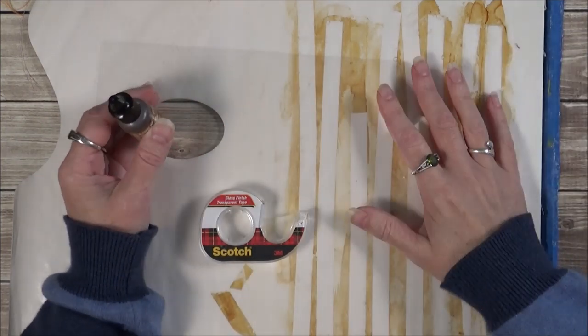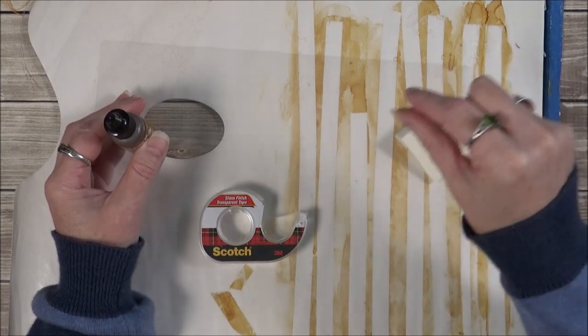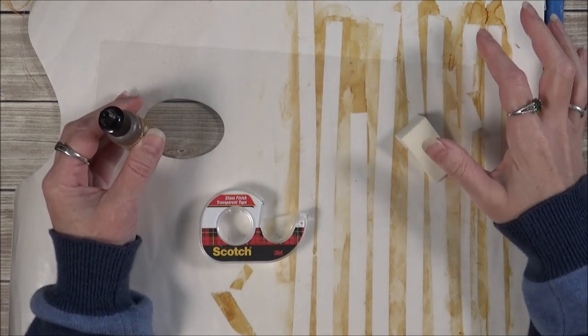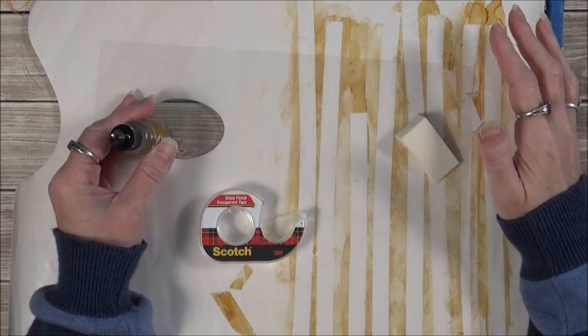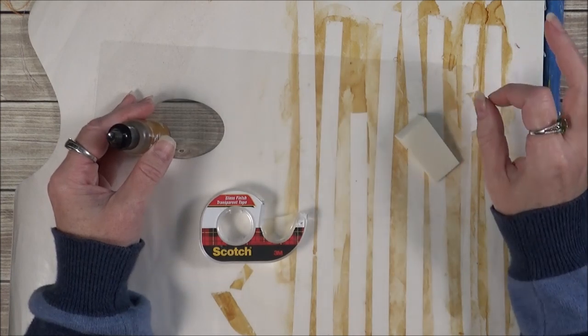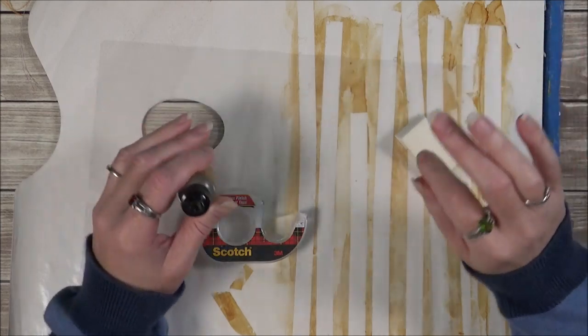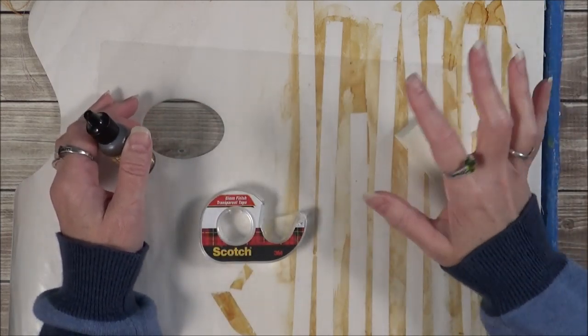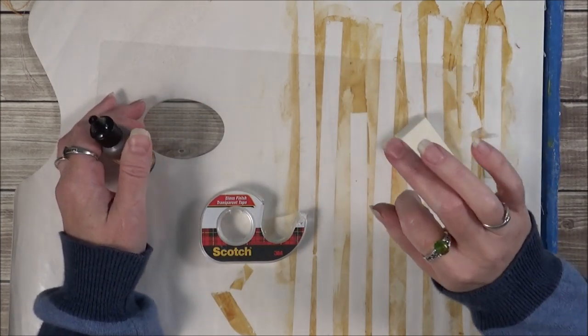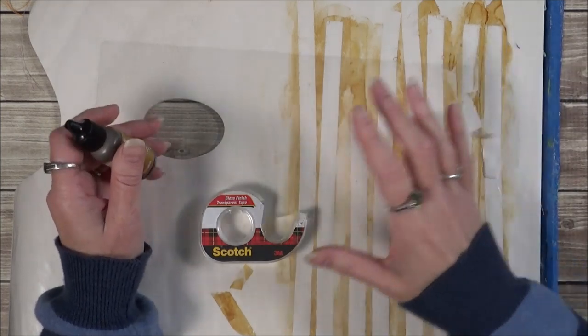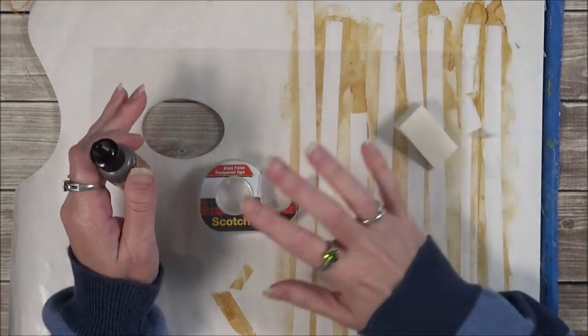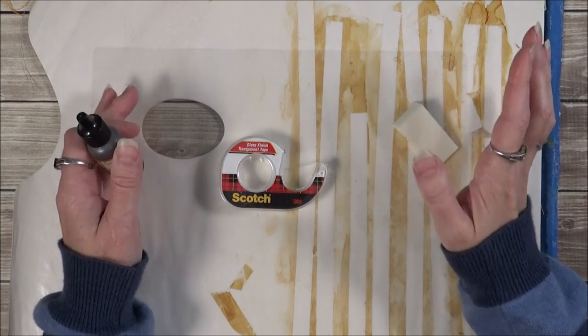So if you look back at old paper that's been taped together because it was ripping or you look at old photo albums where people have taped their photos in, the tape was not archival back then. So everything has that yellowy brownish color to it. So this is a great way to just take new supplies and make them look old.